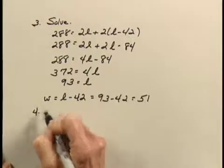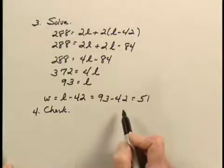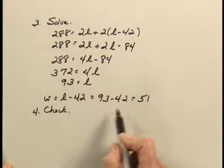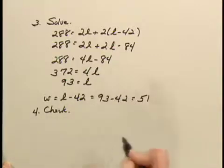Let's check that in the original problem. We were told that the width is 42 less than the length, and 51 is 42 less than 93. So that checks.